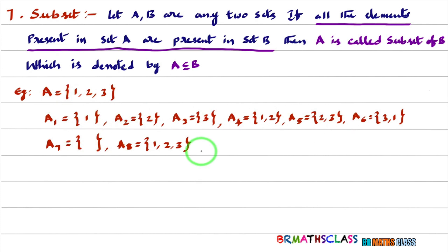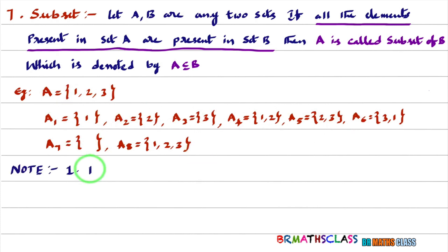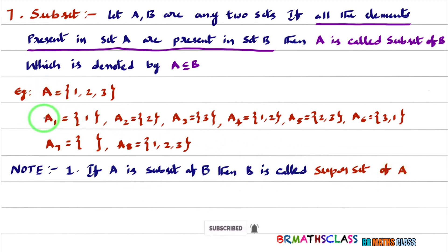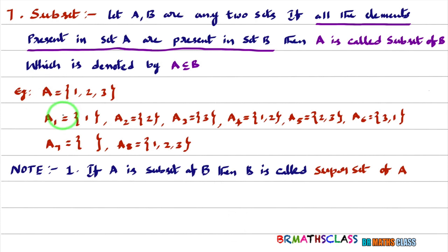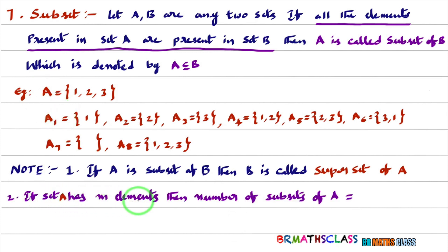First point: whenever A is a subset of B, then B is called the superset of A. Observe that A1 is a subset of A — here we say that A is the superset of A1. Second point: if set A has M elements, then the number of subsets of A is 2 to the power M.